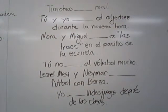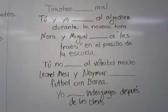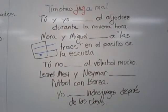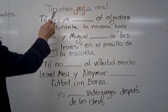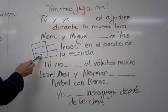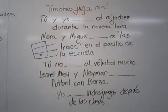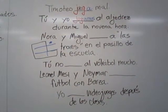Welcome back. Let's see how you did on these. Let's take a look at the first one: Timoteo juega mal — Tim plays badly. Notice it is a UE stem change. Timoteo is one guy and it comes from the lower left — that's where he is.